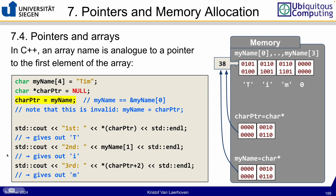When you increment a pointer by one, it shifts to the next memory location based on the type size — for characters it's one byte per step. So incrementing a `char*` by one moves to the next character, incrementing an `int*` by one moves four bytes forward. It's a type-based memory shift, not a fixed byte shift.